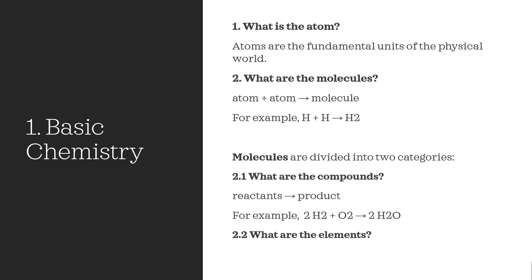If a molecule contains only a single type of atom, then it is an element. And if a molecule contains different types of atoms, it is called a compound. For example, H2 is an element because it consists of one type of atom — hydrogen. While H2O is already an example of a compound since it consists of two hydrogen atoms and one oxygen atom. Also, in chemical reactions the molecules or atoms that are interacting are called reactants and are found on the left side of the arrow. The products, the result of the interactions, are found on the right side of the arrow.